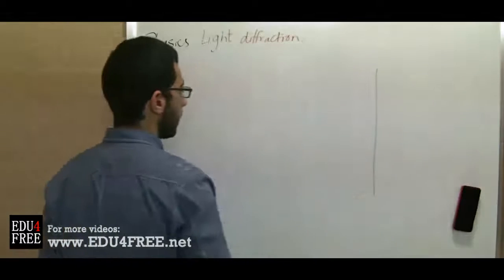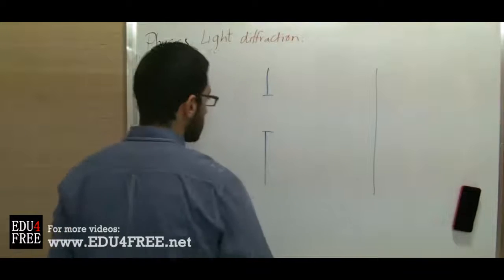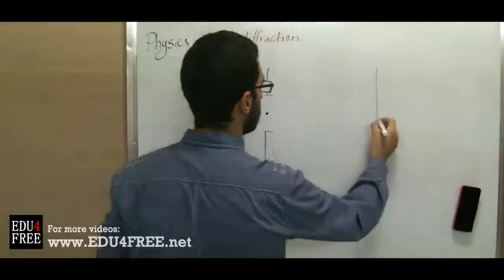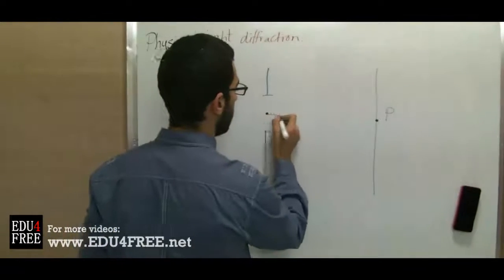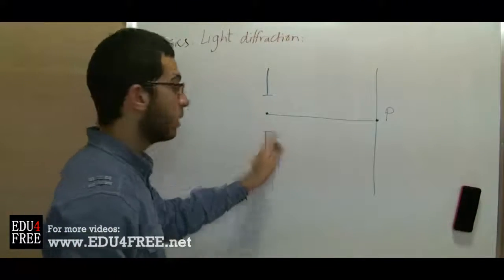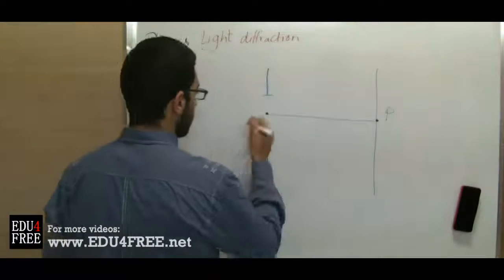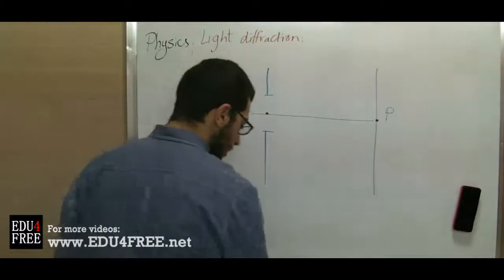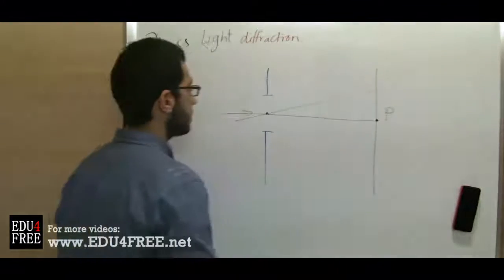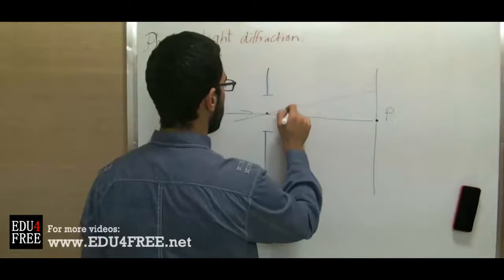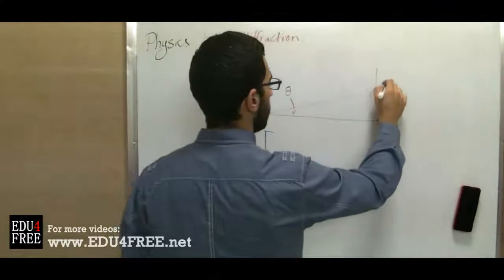Let's say this is the screen, and this is the hole. So this is the center of the hole and this is the point where the light rays meet at the normal angle. So this connects between the center of the hole and the central bright spot. So when light moves with an inclination angle, let's say like this. So here we have an angle of theta. And here another point.